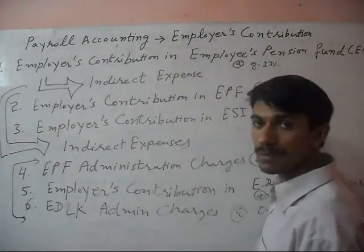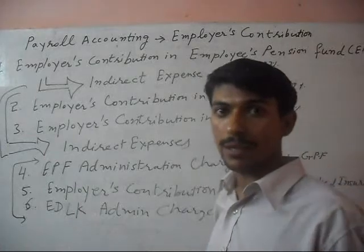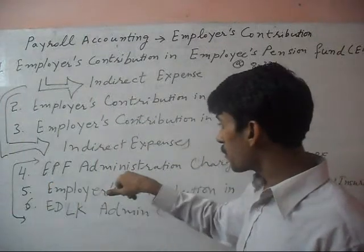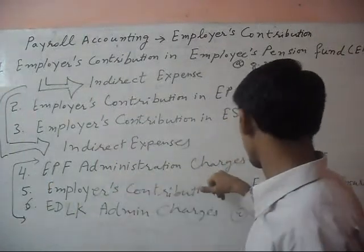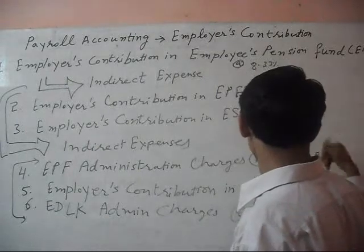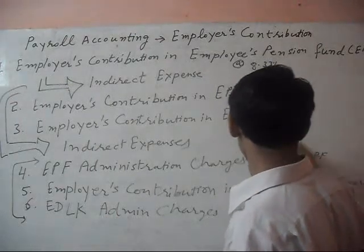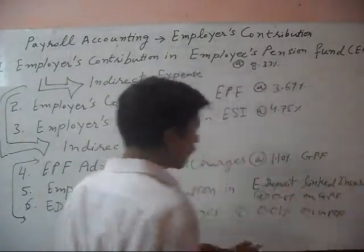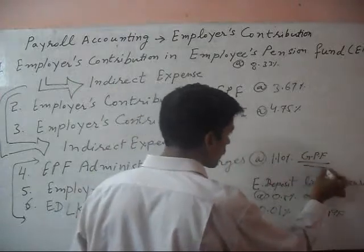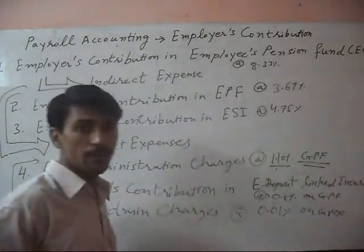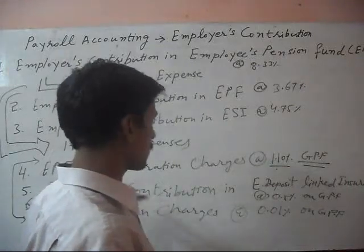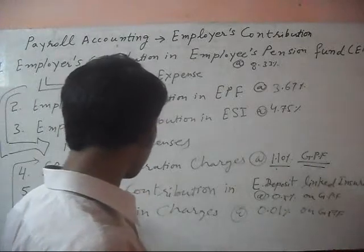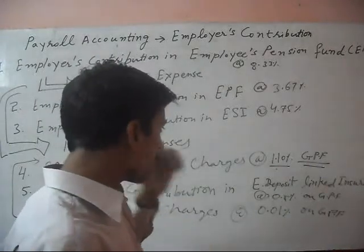That is 4.75% of basic pay. Next is employee's pension fund administration charges. This is 1.10% of gross pension fund, meaning the total of employee's contribution and employer's contribution. We will calculate 1.10% of this total and deduct it from the employer's money.